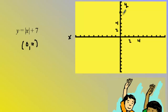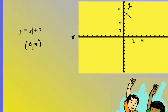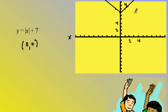The slope is one — there is no stretch or shrink — so up one over one each way. I have the two points I need to draw the rays. I'll make sure to label the vertex and label the graph.